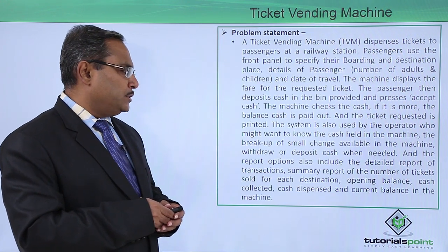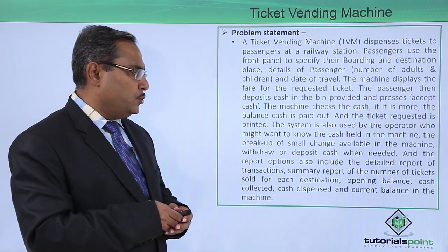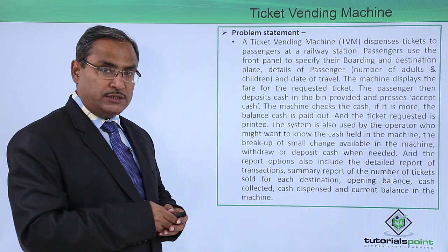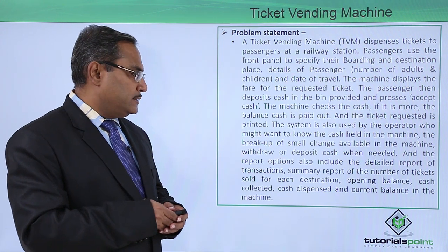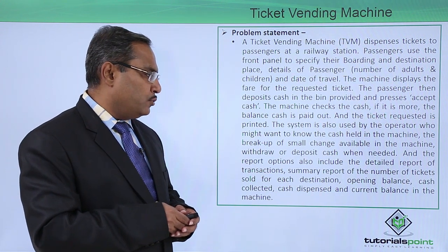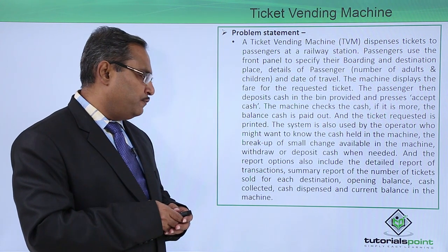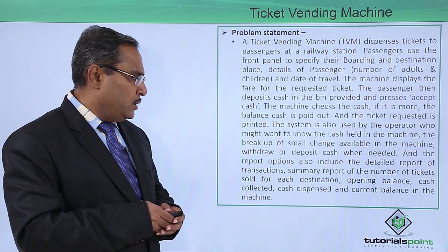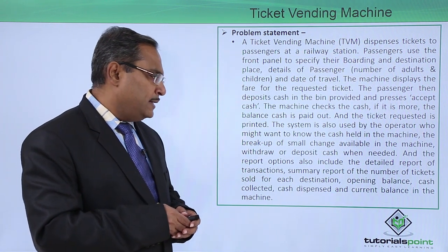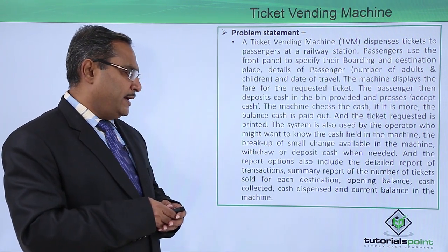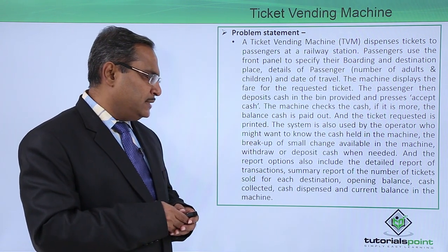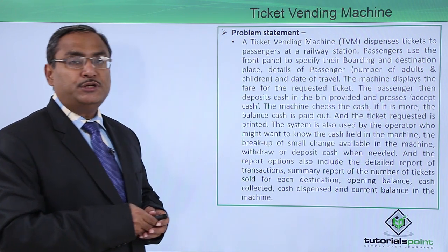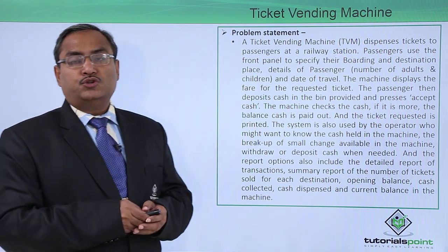The report options include a detailed report of transactions, a summary report of the number of tickets sold for each destination, opening balance, cash collected, cash dispensed, and current balance in the machine.